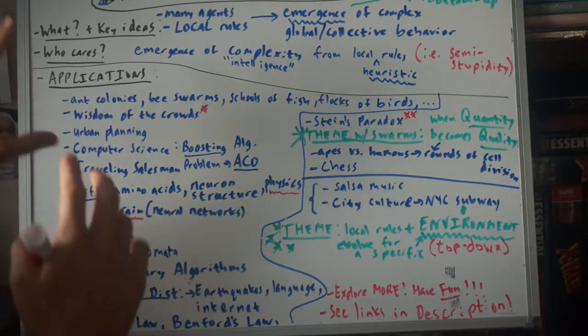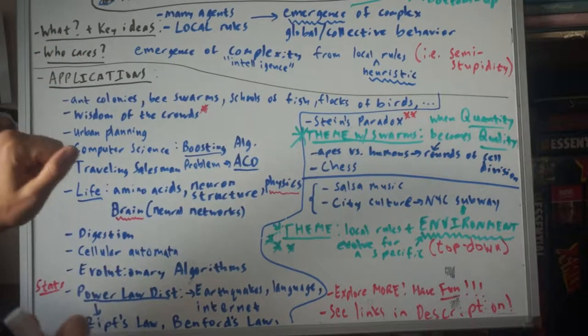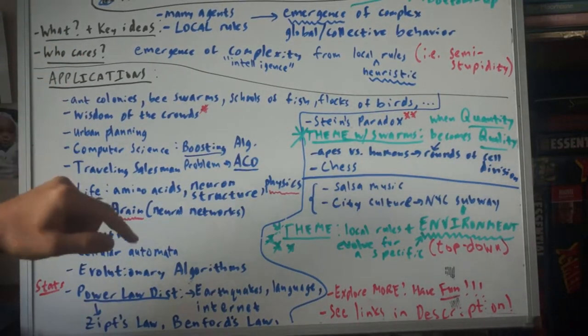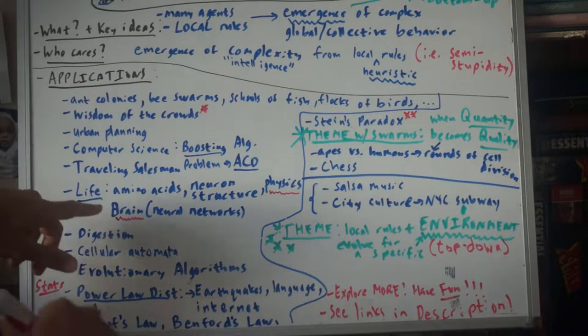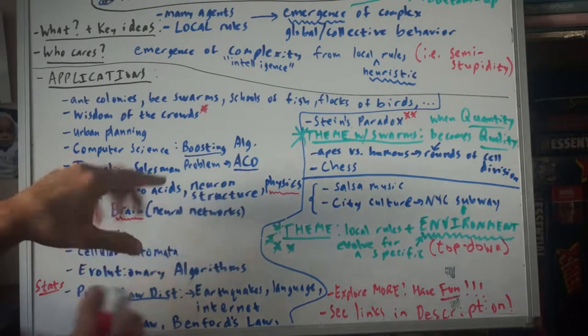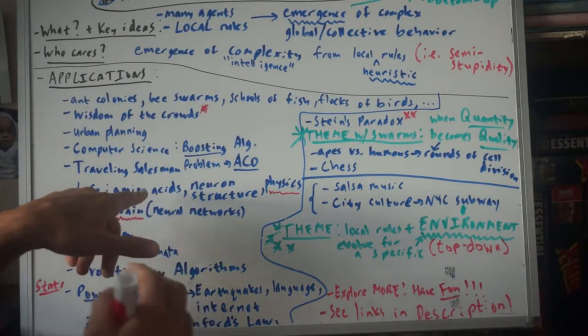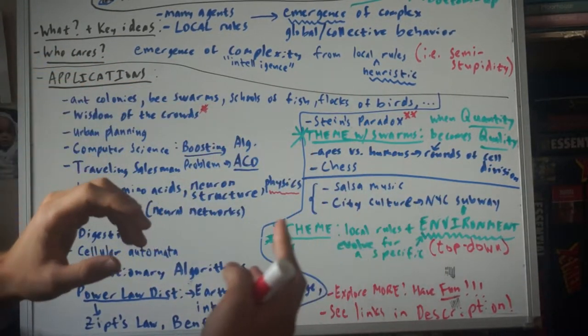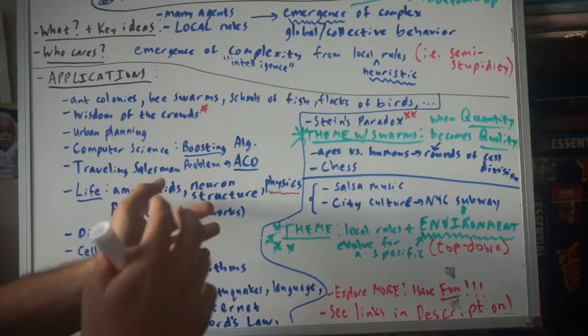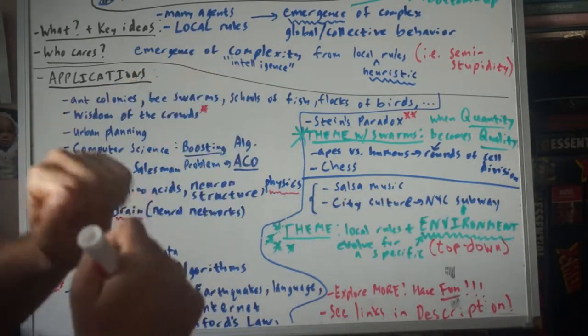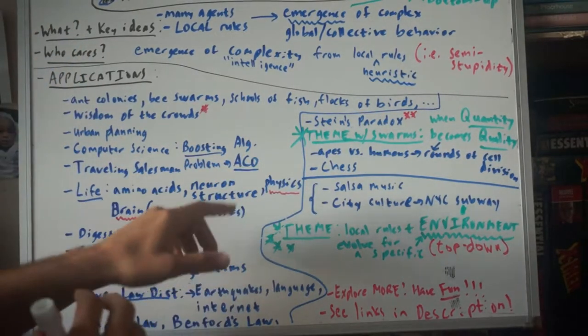All right. Life. So amino acids. And by the way, a lot of these, I'm going to again, check the link in the description. A lot of these examples, not all of them, but a lot of them are taken from this wonderful lecture number 22. See the description from Professor Sapolsky. So if you watch that, you can get a lot more on this. So life, amino acids, protein folding. So if you think about it, there's basically two, there's probably more, but there's at least two rules, which is things either attract or they repel. So just using those two simple local rules, which is just, are you attracted to your neighboring amino acid or not? That is the basis for the formation, a lot of life and proteins.